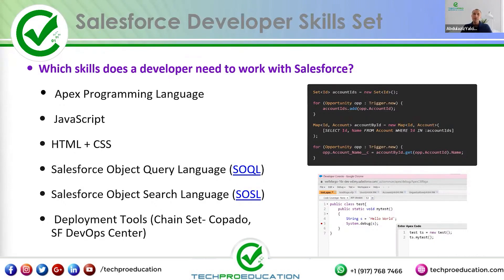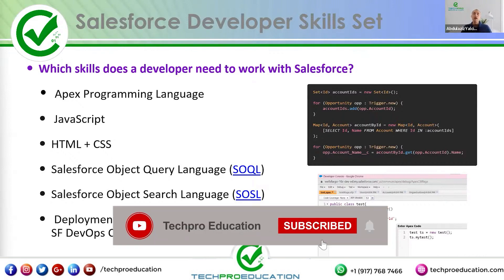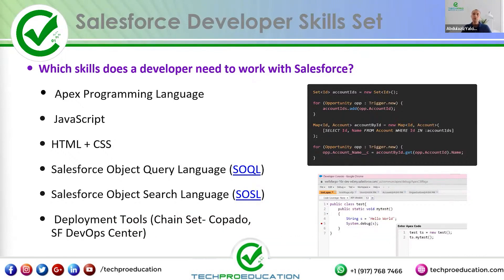The two most prominent languages in the Salesforce world are JavaScript and Apex. Apex is a programming language developed specifically for the Salesforce platform. It is very similar to the Java language, so if you are familiar with Java, Apex will feel quite familiar. JavaScript, on the other hand, is a totally different language, but it is very fun to learn, and it's very fun to implement both JavaScript and Apex in your coding.